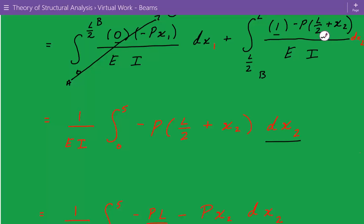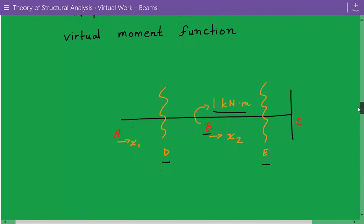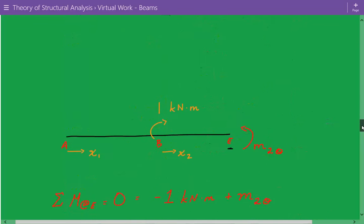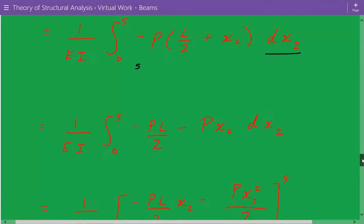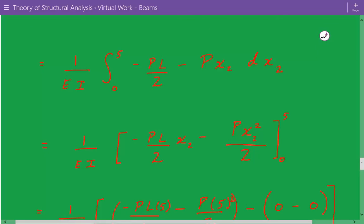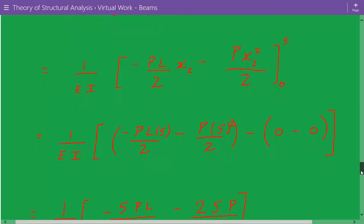And the integration is from 0 to 5, not 5 to 10, because the coordinate system starts from B. So the coordinate system X2, see here, it starts from location B. So this is 0.0 and this is 5 here from B to C. So we just simplify and we integrate. And after the integration, we get negative P L X2 over 2 minus P X2 squared divided by 2. And the limits of integration are from 0 to 5. And we just plug in the numbers.